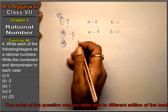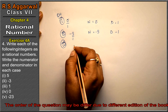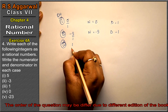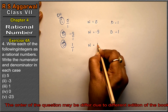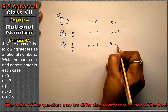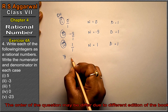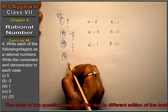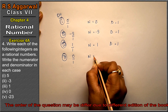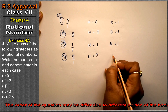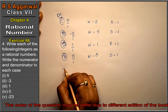Third part is 1. We can write 1 as 1 upon 1, so the numerator is 1 and the denominator is also 1. Fourth part is 0. We can write 0 as 0 upon 1, so the numerator is 0 and the denominator is 1.